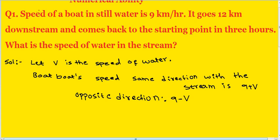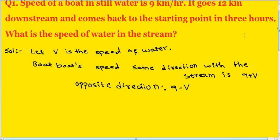The formula used is: distance divided by speed, where x divided by v1 plus x divided by v2 equals t, the total time.